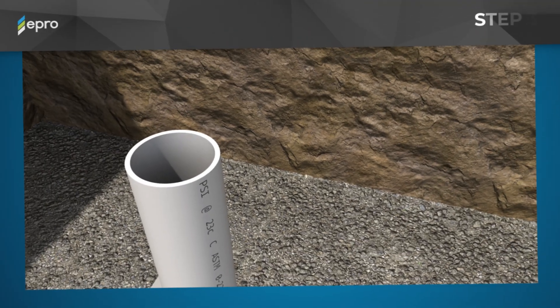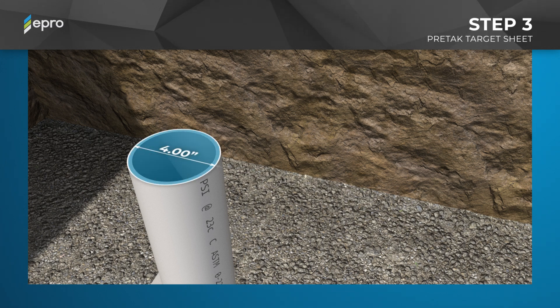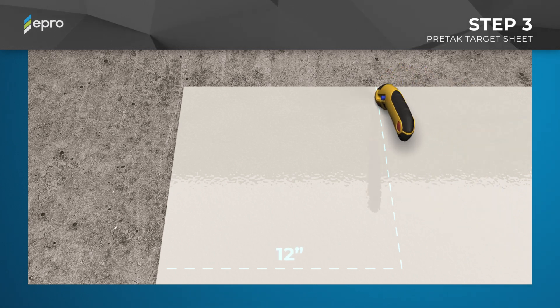Step 3: Create a PRETAC target sheet. To determine the size of the target sheet, measure the width of the pipe and add 8 inches to find the final length per side. We are using a 4-inch diameter pipe, so the target sheet sides will be 12 inches long in this example. First, measure out and cut a 12-inch square PRETAC target sheet.